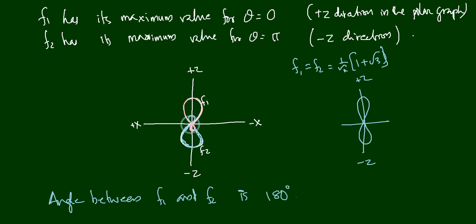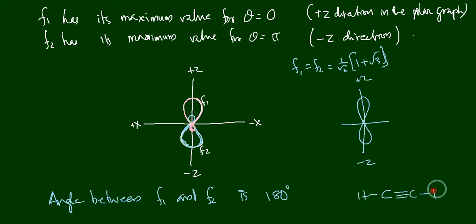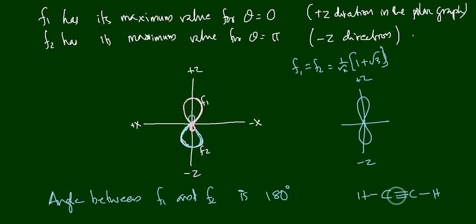Since SP hybrid orbitals are at 180° to each other, any molecule utilizing SP hybrid orbitals in bond formation will be linear. For example, in acetylene (H–C≡C–H), the carbon atoms are in the SP hybridized state. Each carbon has two SP hybrid orbitals: one used to bond with hydrogen and the other to bond with the adjacent carbon. The pi bonds are formed by overlap of the unhybridized P orbitals. This makes the molecule linear.